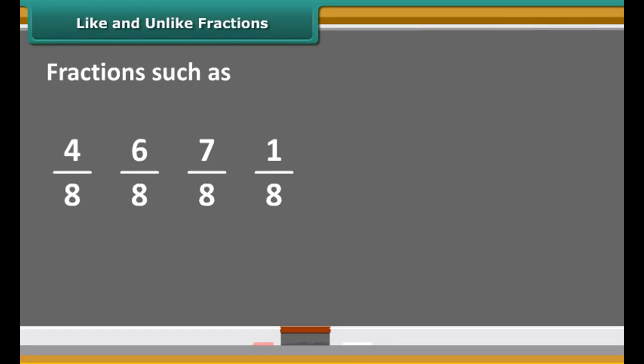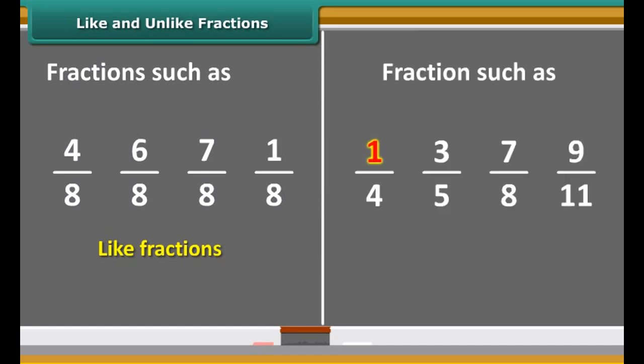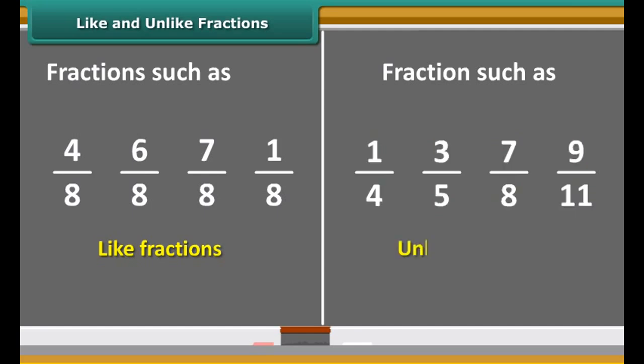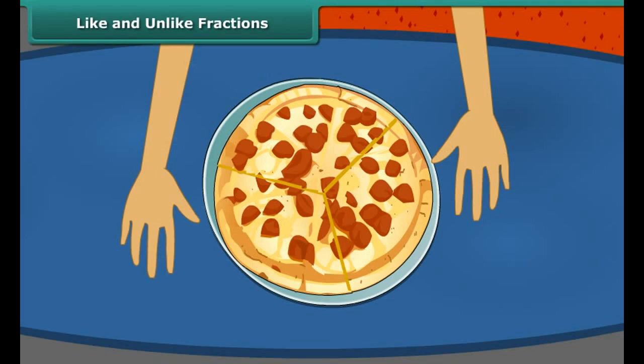Fractions such as 4/8, 6/8, 7/8, and 1/8 with the same denominator are called like fractions. Fractions such as 1/4, 3/5, 7/8, and 9/11 with different denominators are called unlike fractions.